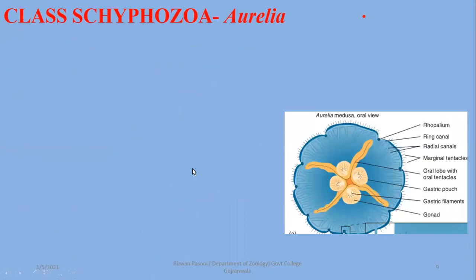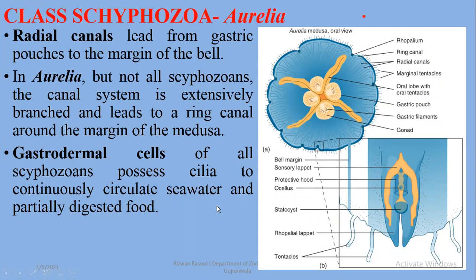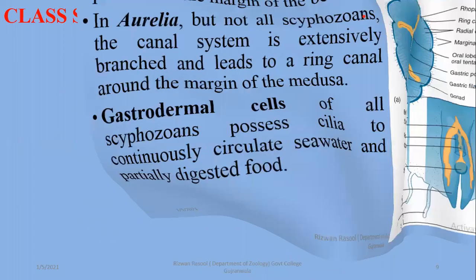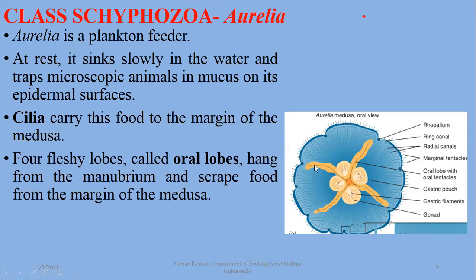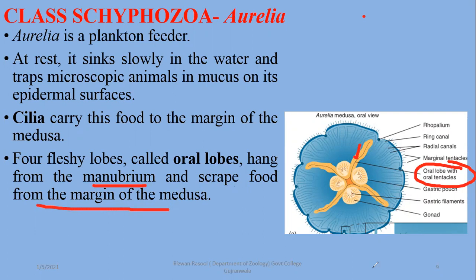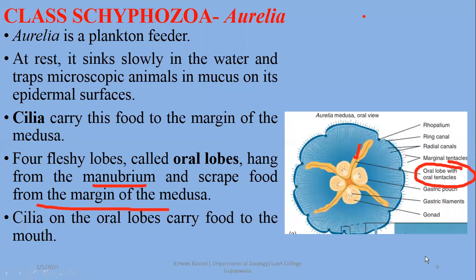Gastrodermal cells of all scyphozoans possess cilia to continuously circulate seawater and partially digested food. Besides Aurelia's food, it is mainly zooplankton. At rest, Aurelia sinks slowly in the water and traps microscopic animals in mucus on its epidermal surface. Cilia carry this food to the margins of the medusa, and four fleshy oral lobes with oral tentacles — visible in yellow — hang from the manubrium and scrape food from the margins to the mouth.